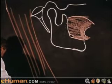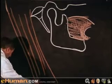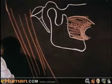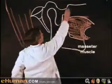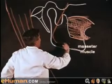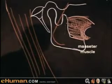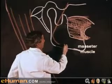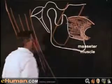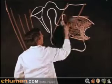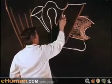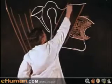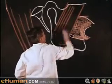Attached to the lateral surface of the mandible, coming down from the zygomatic arch, we have the masseter muscle, inserted into the outer surface of the ramus of the mandible. We can now rub out the structures deep to that — the ramus of the mandible and the buccinator muscle — and put in the fibers of the masseter muscle.